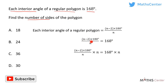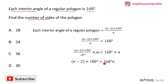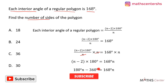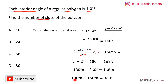We multiply both sides by n to remove the fraction. This gives us n minus 2 times 180 degrees equals 168n degrees. Expanding the brackets: 180n minus 360 degrees equals 168n degrees. Grouping like terms: 180n minus 168n equals 360 degrees, which gives us 12n equals 360 degrees.